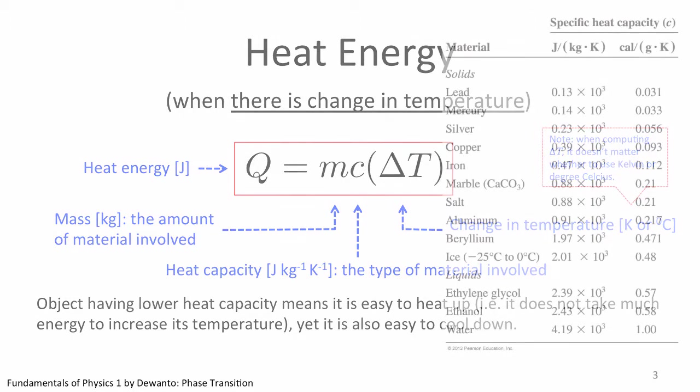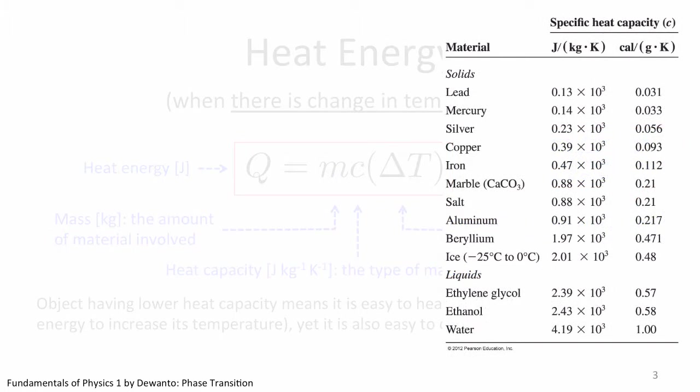Even water and ice, though both are made of the same H2O molecules, possess different heat capacity. Ice heats up and cools down faster than water. Furthermore, if 4200 joules of heat has to be supplied to increase the temperature of 1 kg of water by 1 degree, the same 4200 joules of heat has to be extracted to decrease the temperature of 1 kg of water by 1 degree.